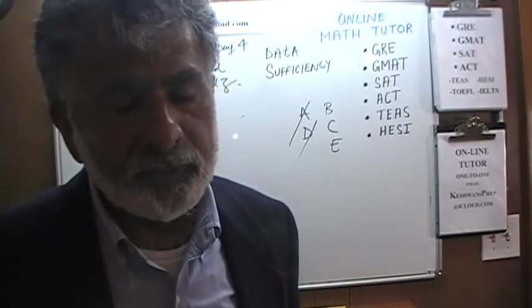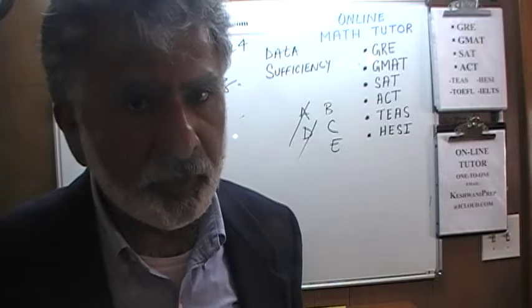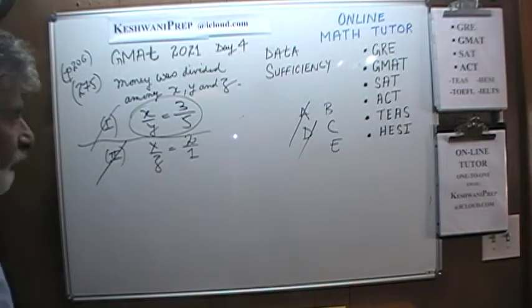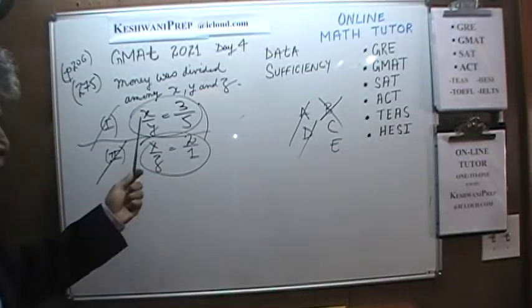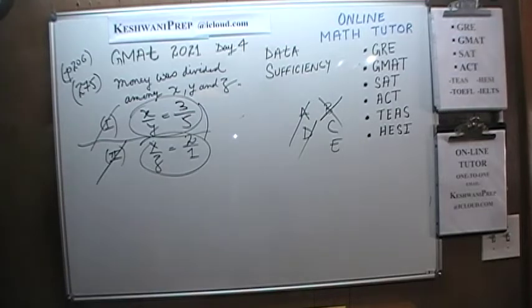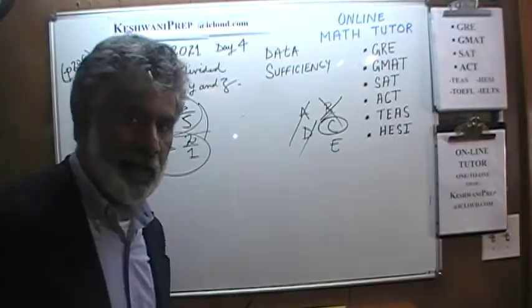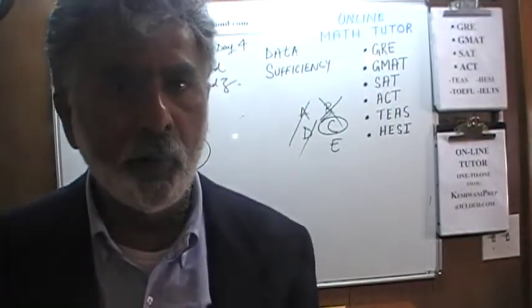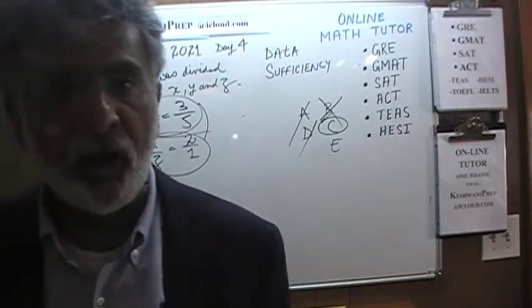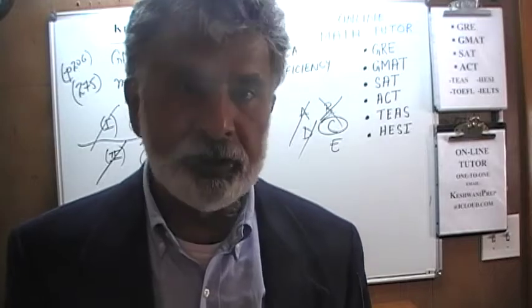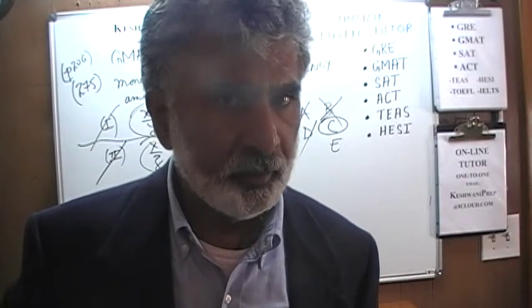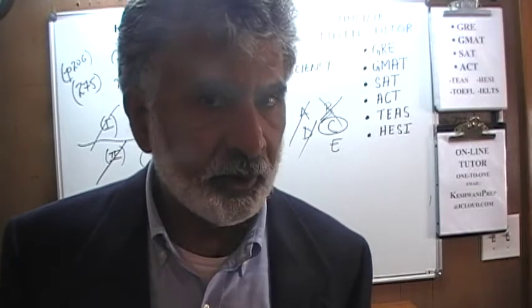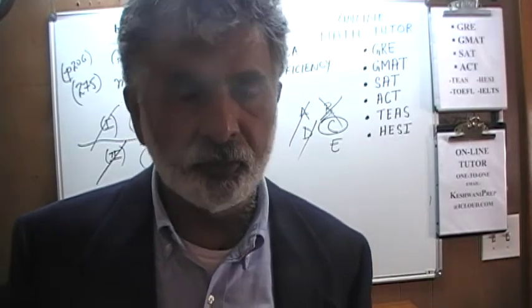Looking at the second statement alone: simply knowing the ratio of x to z is 2 to 1 does not enable us to figure out who got the most money, because we know nothing about y. So the second statement by itself is also not enough. But if we put both statements together, we now have information about x, y, and z — we should be able to figure out who got the most money. The answer is C.